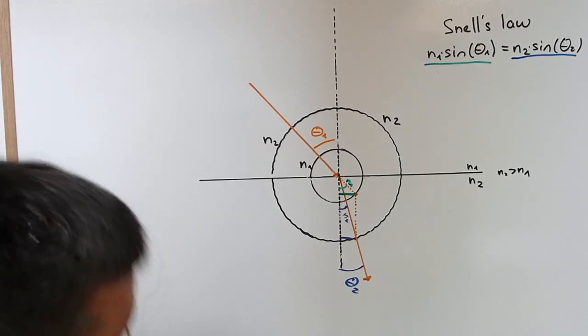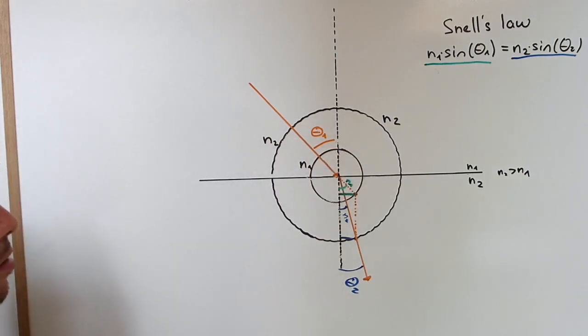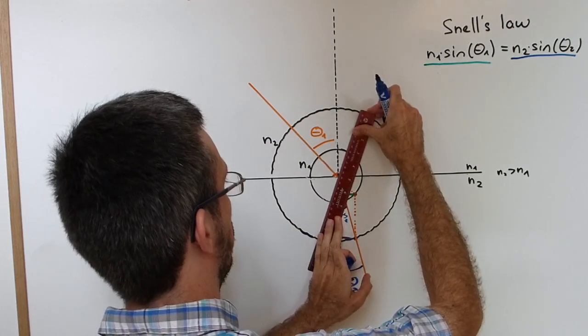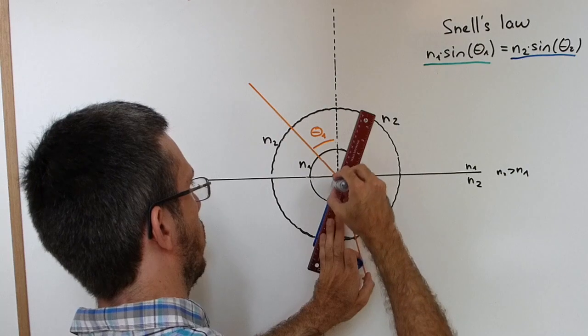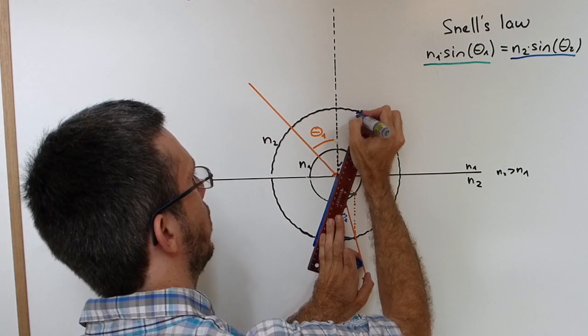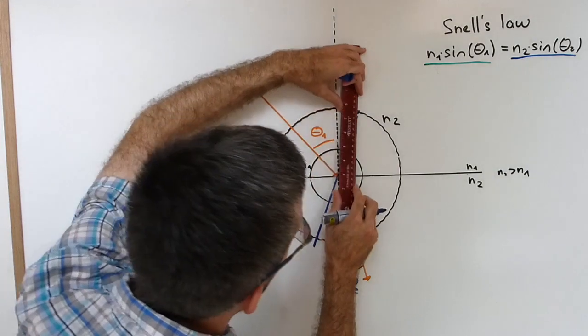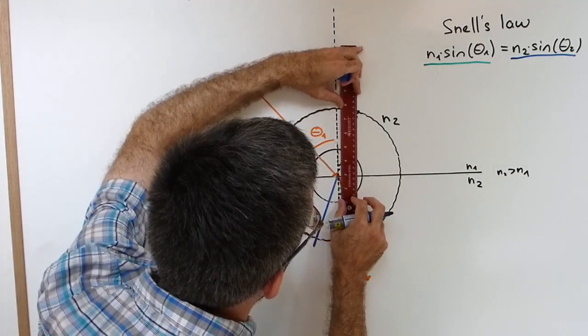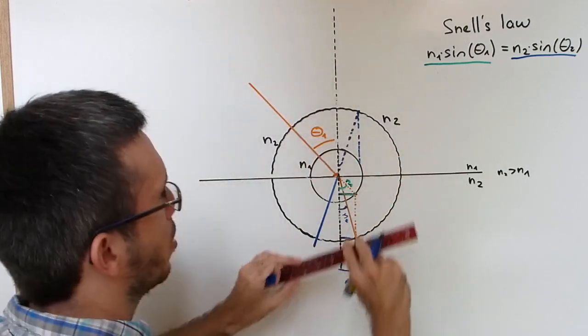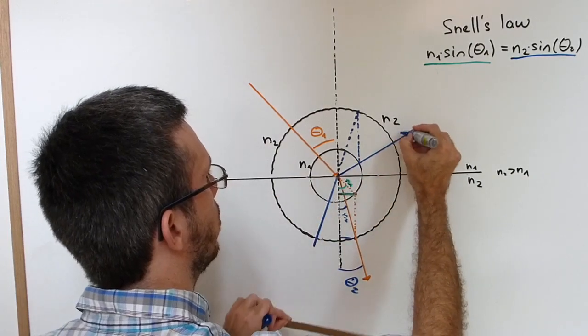I can also use this if I want to go from the higher index to the lower index. So same thing. Let's say I have a ray coming up like this. All I need to do is continue until I hit the index of refraction coming from. Making a parallel line to the normal down. Look at the intersection here. And here is my refracted ray.